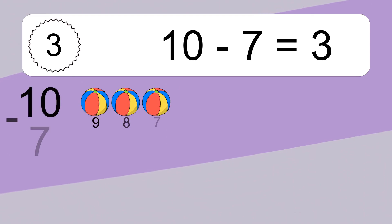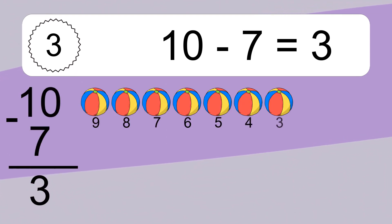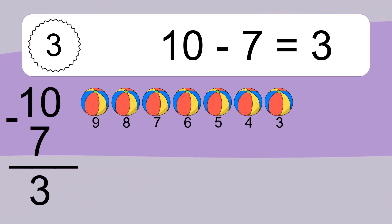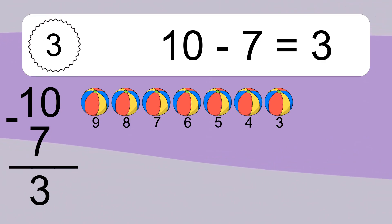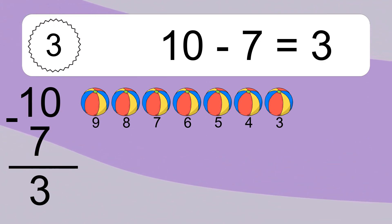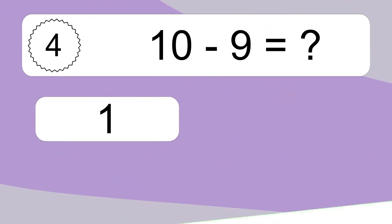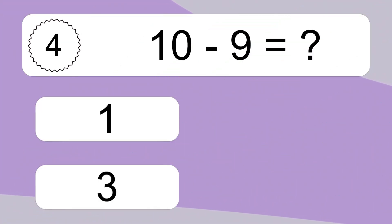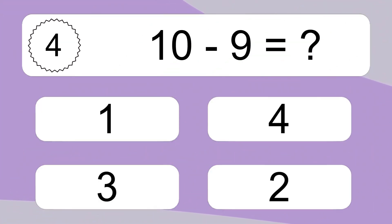10 minus 7 equals what? 10 minus 7 equals 3. Let's count it: 9, 8, 7, 6, 5, 4, 3.